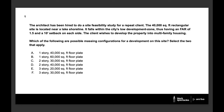Let's head into our first question. An architect has been hired to do a site feasibility study for a repeat client. The 40,000 square foot rectangular site is located near a lake shoreline, falls within the city's low development zone with an FAR of 1.5 and a 10-foot setback on each side. The client wishes to develop the property into multifamily housing. Which of the following are possible massing configurations? Select the two that apply. The correct answers are C and E: a two-story building with a 30,000 square foot floor plate, or a three-story building with a 20,000 square foot floor plate.